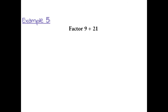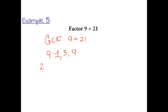Example 5: factor 9 plus 21. First we want to find the greatest common factor of 9 and 21. Factors of 9 are 1, 3, and 9. Factors of 21 are 1, 3, 7, and 21. So the greatest common factor between the two is 3.